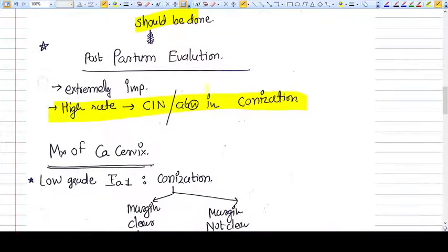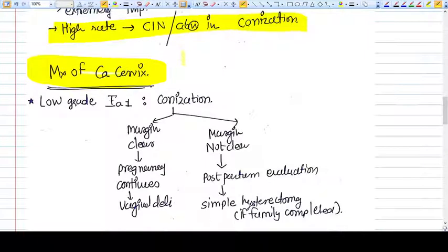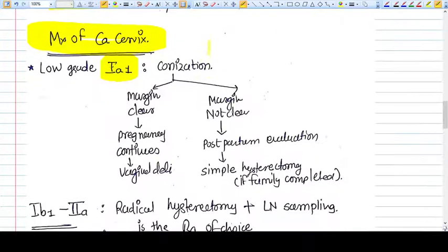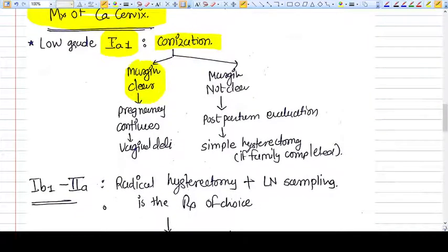If there is invasive cervical cancer and it is stage 1a1, we know that conization is the treatment of choice. After conization, histopathological examination will show the margins. If the margins are clear and free from disease, the pregnancy continues and vaginal delivery is considered.